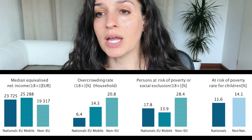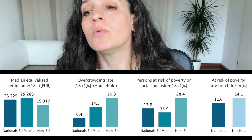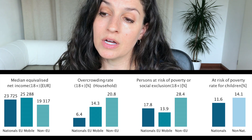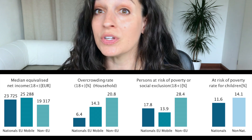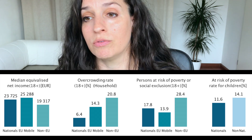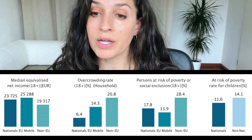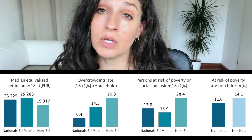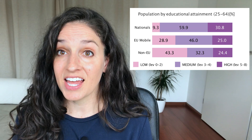If we look at overcrowding rates — high numbers of people living in the same area — there is more overcrowding among immigrants than among nationals. Looking at the risk of poverty or social exclusion, non-EU immigrants have a higher risk of poverty and social exclusion than EU migrants or nationals. This pattern is similar when we look specifically at the risk of poverty for children.